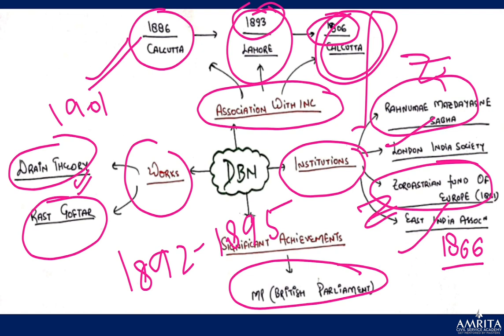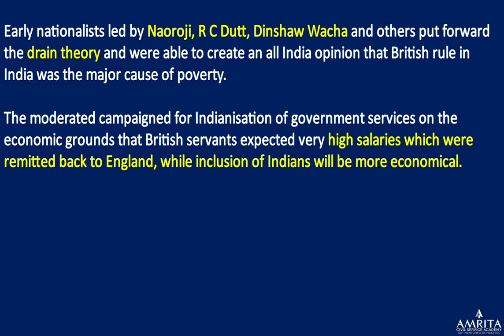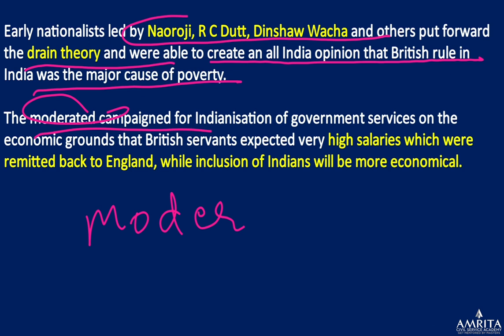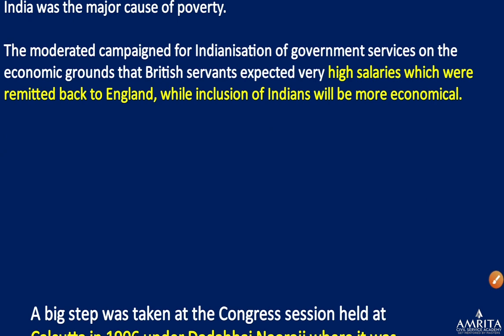The drain theory: early nationalists led by Naoroji, RC Datt, Dinsha Wacha, and others put forward the drain theory — that British rule was a major cause of India's poverty. The moderates campaigned for the indigenization of government service, arguing that British servants expected very high salaries and remitted all the money to England, which was one of the major economic drains from India.